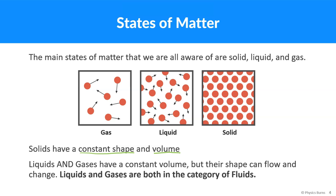Liquids and gases can have a constant volume, but their shape can flow and change. Liquids and gases both can be squeezed a little bit, but for the most part they have a constant volume but they can flow. Like if you put water into a cup, it'll take the shape of the cup. If you put it onto the ground, it'll take the shape of a puddle and so on.